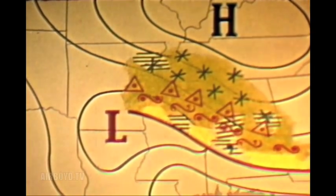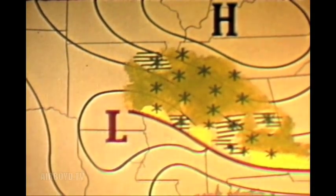When a sub-freezing air mass is overridden by warmer air with temperatures below freezing, snow predominates throughout the entire area. This occurs in the northern states.